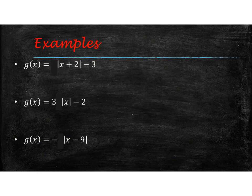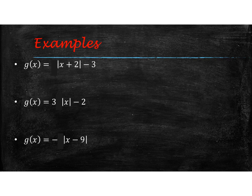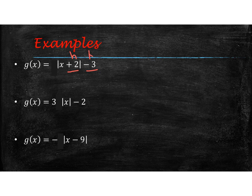So in these next three examples, go ahead and write down what the transformations are that are occurring. In this first example, we have to say what the plus 2 is doing to the absolute value function, and we have to say what the minus 3 is doing.